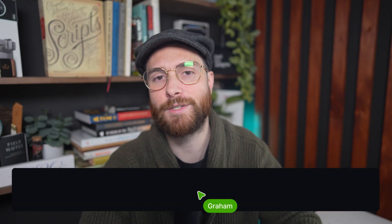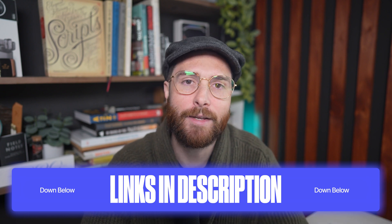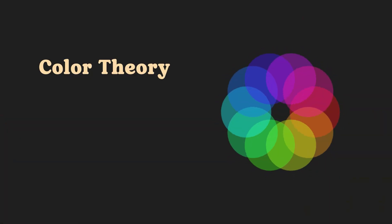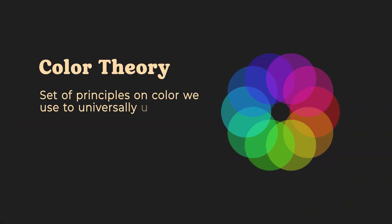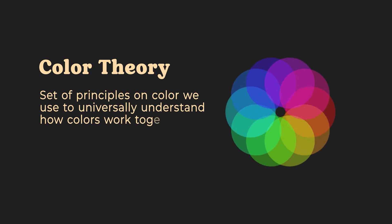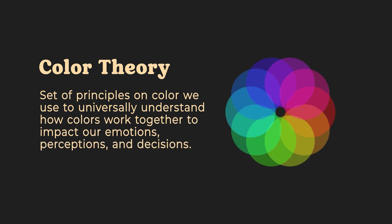If at any point you're more of a reader, we have this exact lesson and all of the subsequent lessons on color theory available on our blog, linked in the description. But let's start with defining what color theory is. Color theory is the set of principles on color that we use to universally understand how colors work together to impact our emotions, our perceptions, and even our decisions.